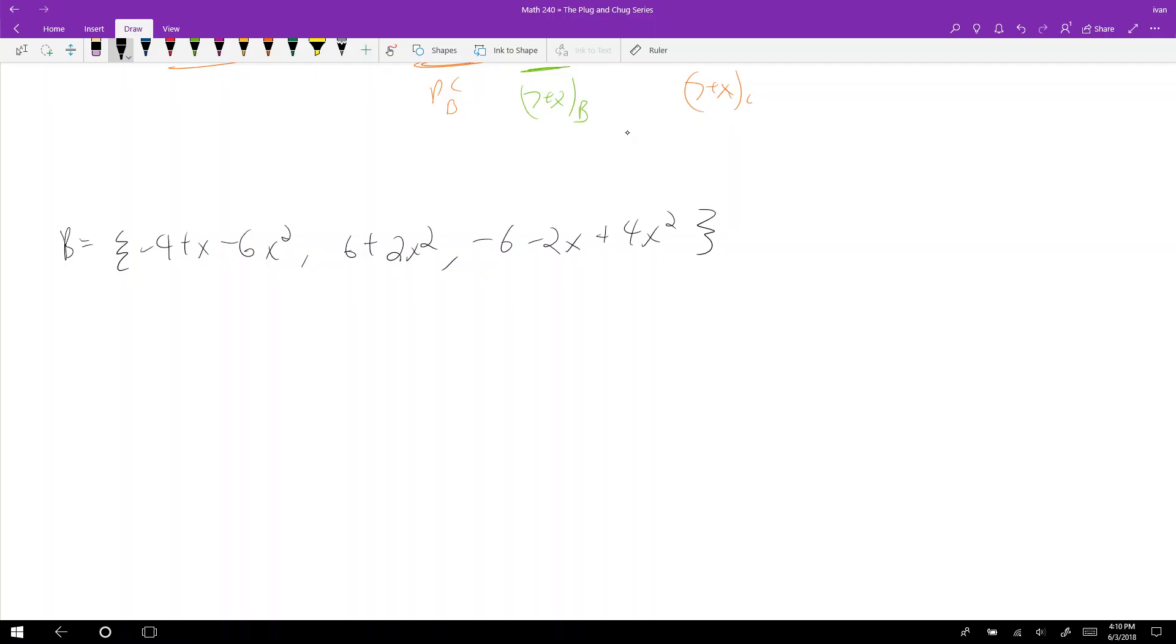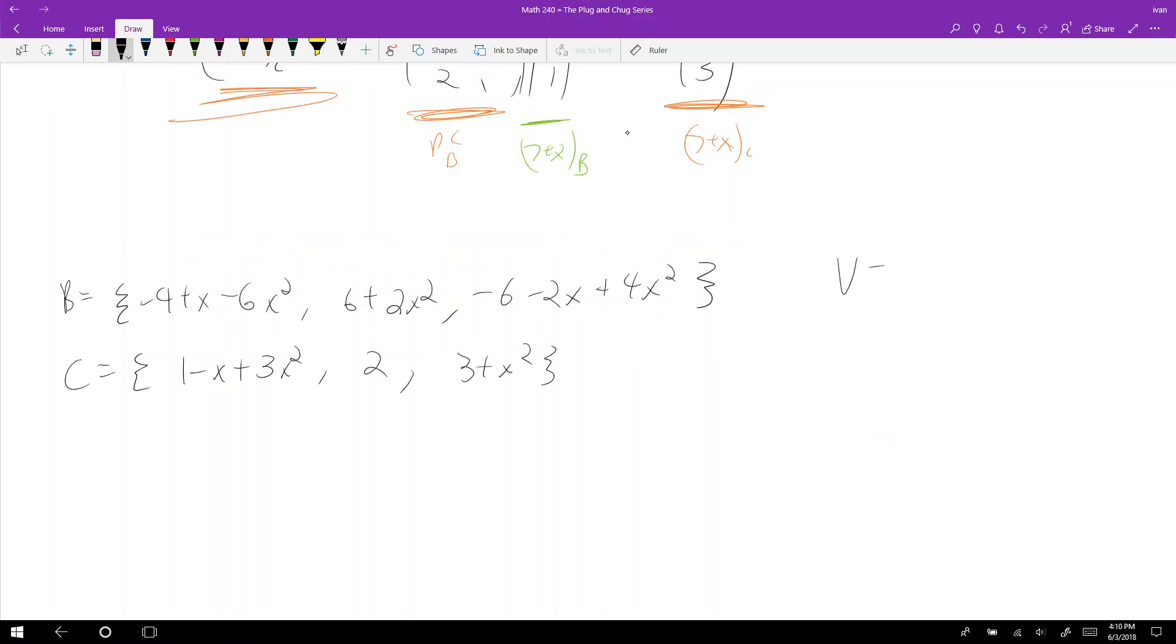Let's run through this first. I'll talk about how to deal with other types of bases later. In this case, we have basis B equal to this, and basis C equal to 1 minus x plus 3x squared, 2, and 3 plus x squared. Our vector space is going to be...